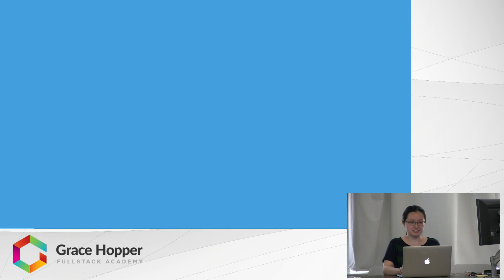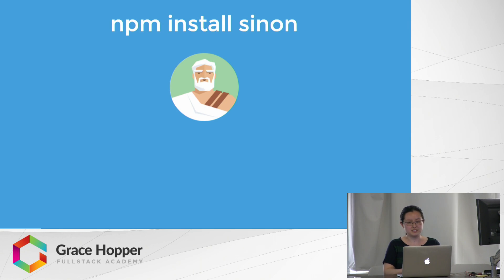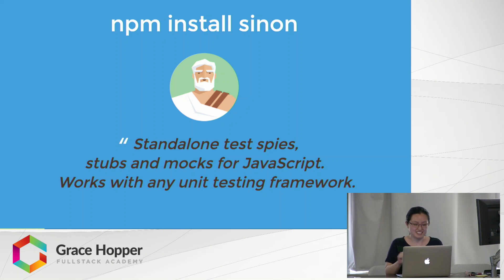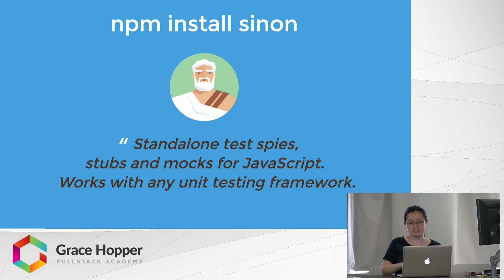One solution to this problem is to use a library like Sinon. Sinon is a popular library that can make your unit tests more powerful. As a side note, the Sinon package name is based on a character in Greek mythology who is involved in the Trojan War. As the official site explains, Sinon provides standalone test spies, stubs, and mocks for JavaScript, and it works with any unit testing framework, such as Mocha.